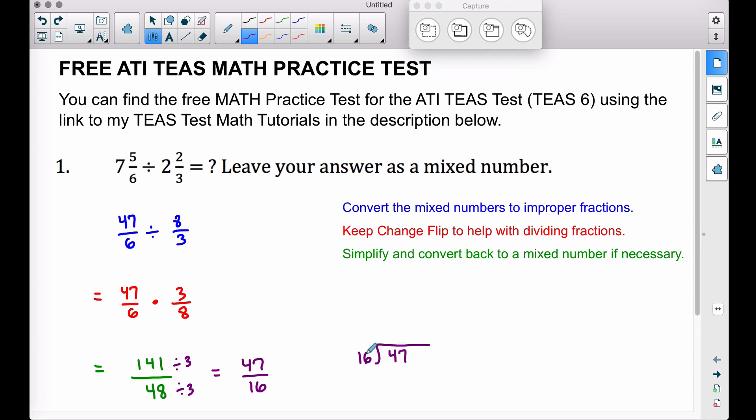So 16 will not go into 47 three times. The most that 16 can go into 47 without going over is 2 times. 16 times 2 is 32. Let's find the difference of these. 7 minus 2 is 5, 4 minus 3 is 1. And there we have it. This right here will give us our mixed number. 16 goes into 47 two whole times with a remainder of 15 over 16, so 2 and 15/16 is our final answer to this problem here.